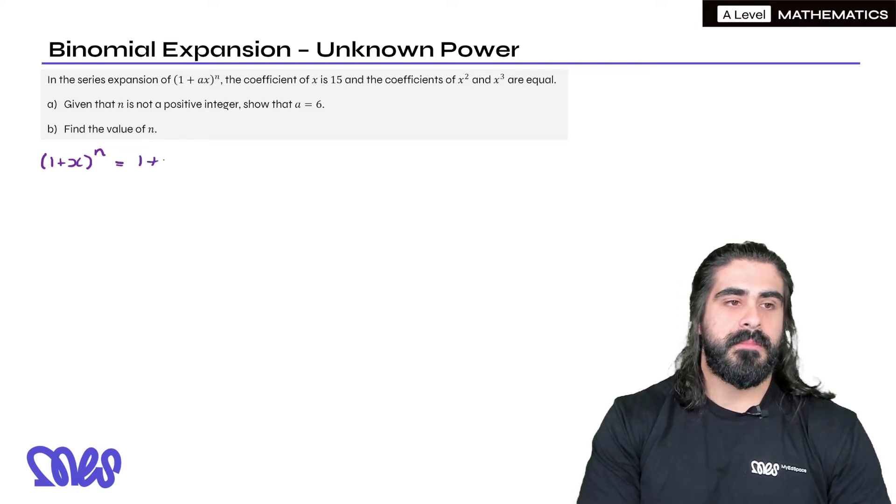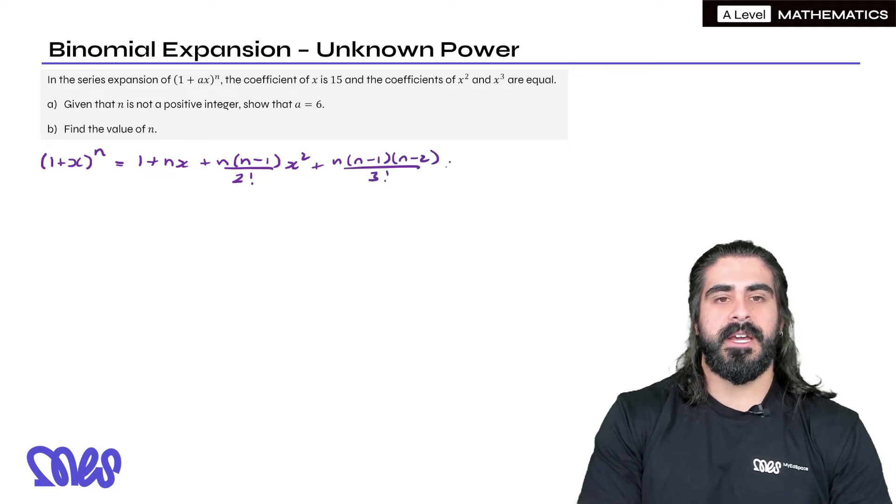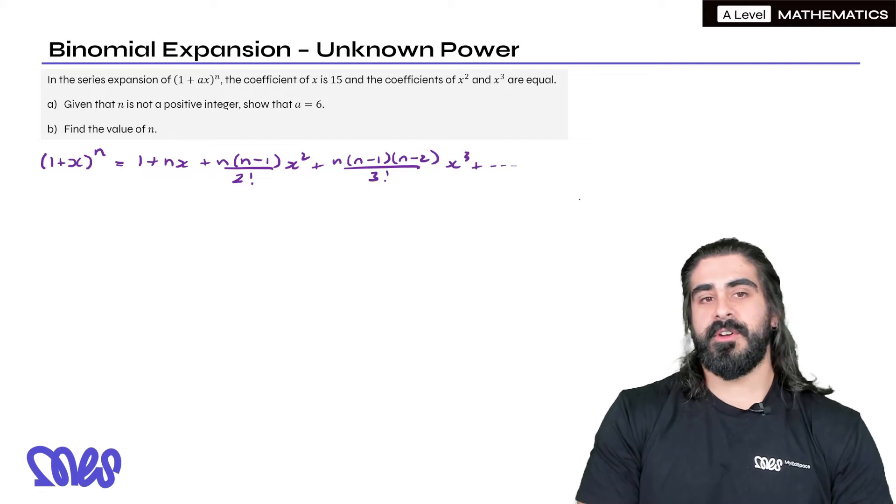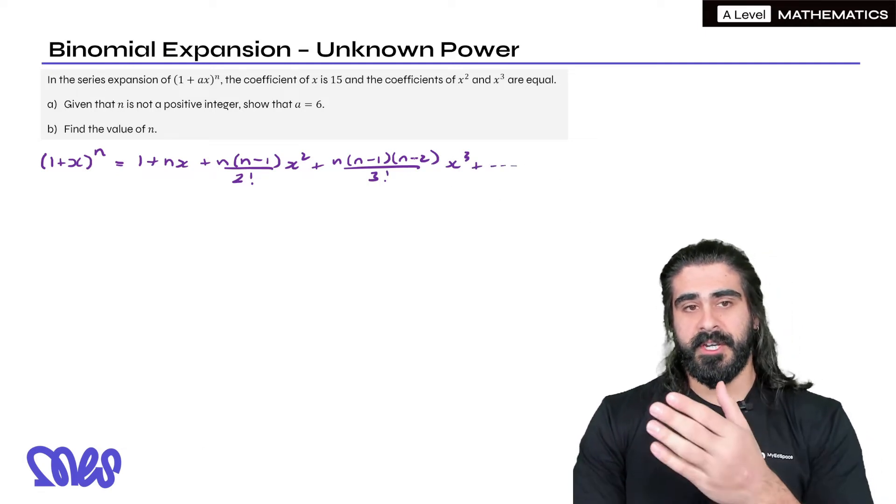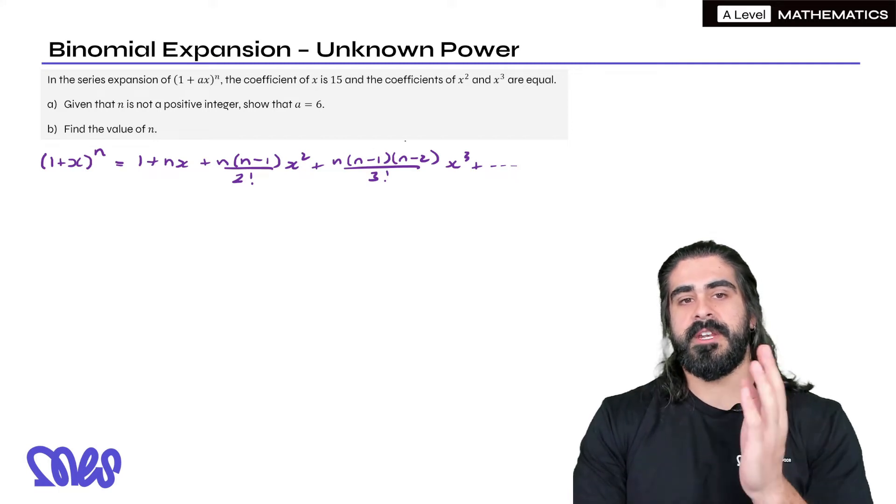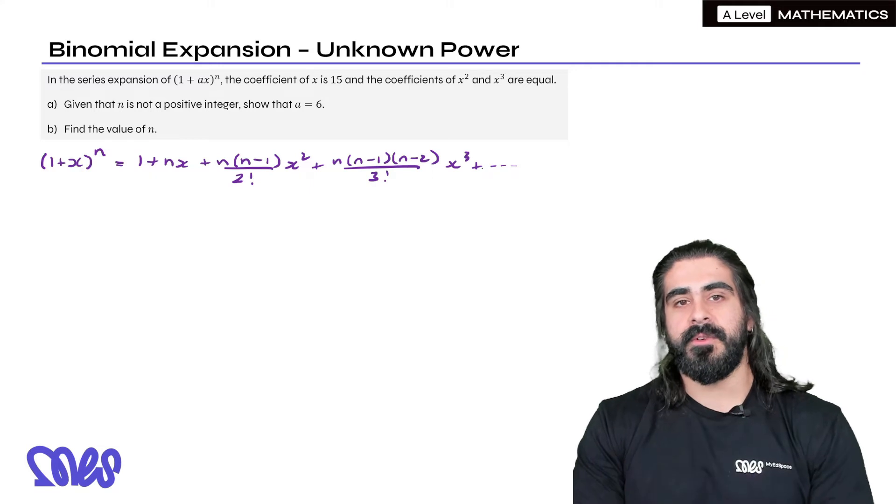Which is 1 plus nx plus n(n minus 1) over 2 factorial x squared, n(n minus 1)(n minus 2) over 3 factorial x cubed, and it keeps going on forever. Maybe you can see the pattern. The next term would have four terms on the top, it'll be n(n minus 1)(n minus 2)(n minus 3) over 4 factorial x to the 4, etc.